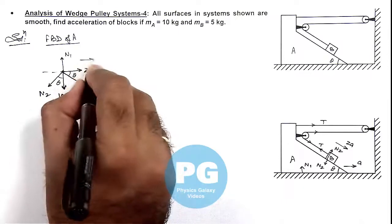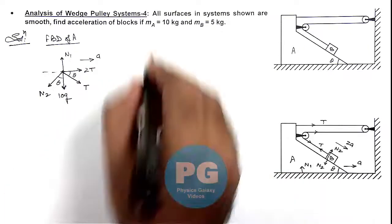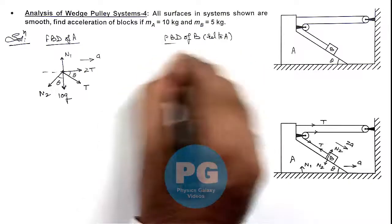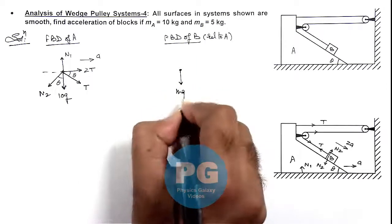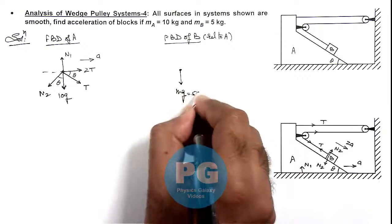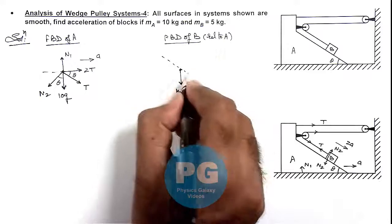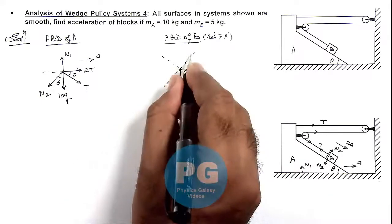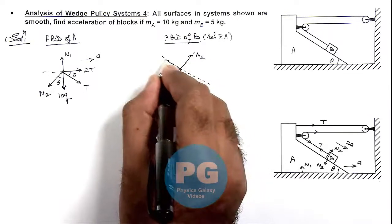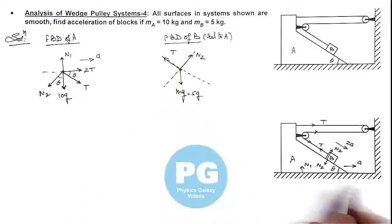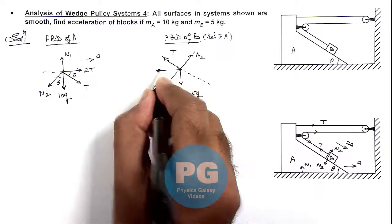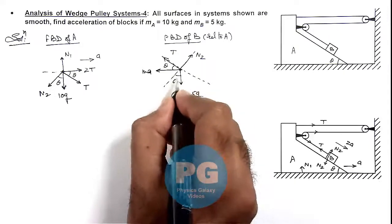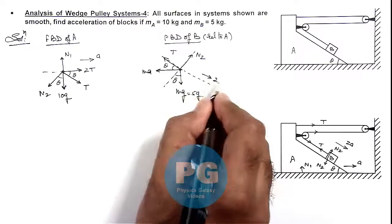So we can say block B will accelerate with acceleration 2aA relative to the wedge block. So here we can see if it is accelerating toward right with acceleration aA, and we can draw the free body diagram of block B, and we draw it relative to block A. So here it is experiencing mg in downward direction, its mass is 5 kg so this can be written as 5g. It is experiencing one normal reaction N2 here, a tension due to string is here, and as A is moving toward right with an acceleration aA, it'll experience a pseudo force 5aA toward left, and this angle would be theta. And this would be accelerating with acceleration 2aA relative to the wedge block.